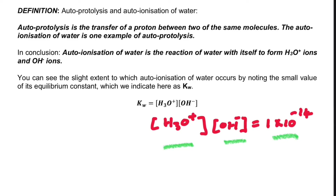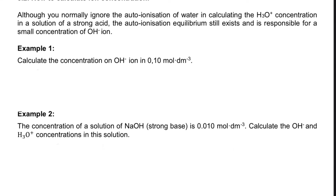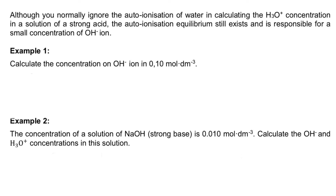From Kw, we can show that pH equals 14 — this is where a lot of things stem from. Although you normally ignore the auto-ionization of water when calculating [H3O⁺] in a strong acid solution, the auto-ionization equilibrium still exists and is responsible for a small concentration of OH⁻ ions.